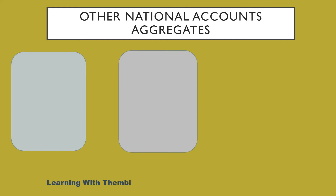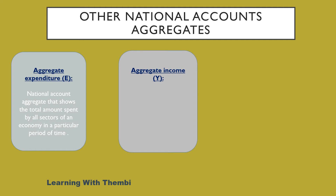National account aggregates may either be addressing production, expenditure, or income. One of the most common national account aggregates used is the GDP, but that is not the only one. We also have aggregate expenditure as well as aggregate income. The aggregate expenditure is the national account aggregate that shows the total amount spent by all sectors of an economy in a particular period of time — referring to all the participants of the economy. If I can refresh your memories back to the circular flow model, we spoke of four participants: household, government, businesses, and also the foreign sector in an open economy.